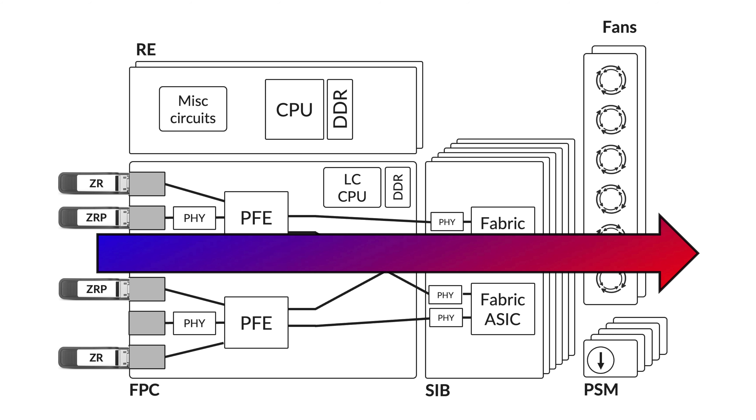It's important to treat high power optics as a specific case: they will preheat significantly the airflow entering the router, which has an important impact on the leakage power of all internal components. Consequently, when measuring the power used by a system, you cannot test in your lab with a router wired only with DAC or AOC interfaces and then add up the power used by high power optics — like 22 or 25 watts per port. That will not be an accurate estimation, because with low power optics the internal chassis temperature is much lower, and consequently leakage power is lower. You need to execute a specific test with high power optics to be realistic.